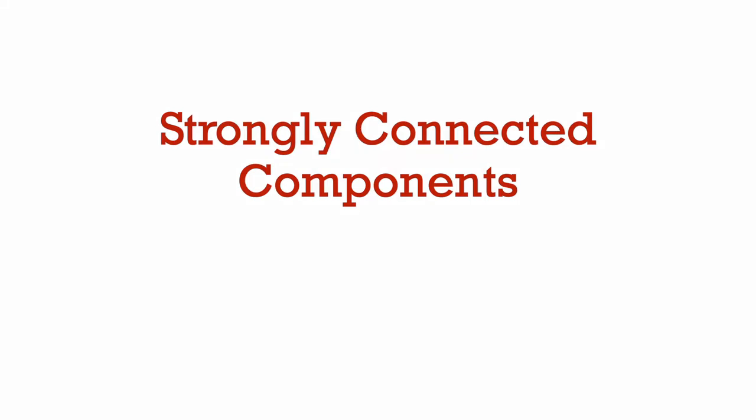We talked about finding the connected components of an undirected graph and saw that we could do this by a depth or breadth-first search. An analogous notion in a directed graph is what is called a strongly connected component. These are a bit more complicated to find than connected components in an undirected graph. In this video, we discuss an algorithm called Kosaraju's algorithm that can find the strongly connected components of a directed graph in time proportional to the number of vertices plus the number of edges. Remarkably, this algorithm is again based on depth-first search.